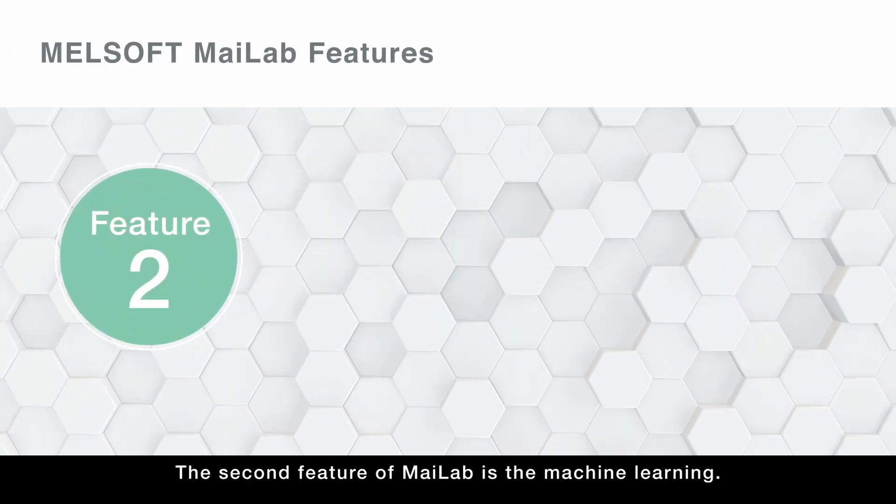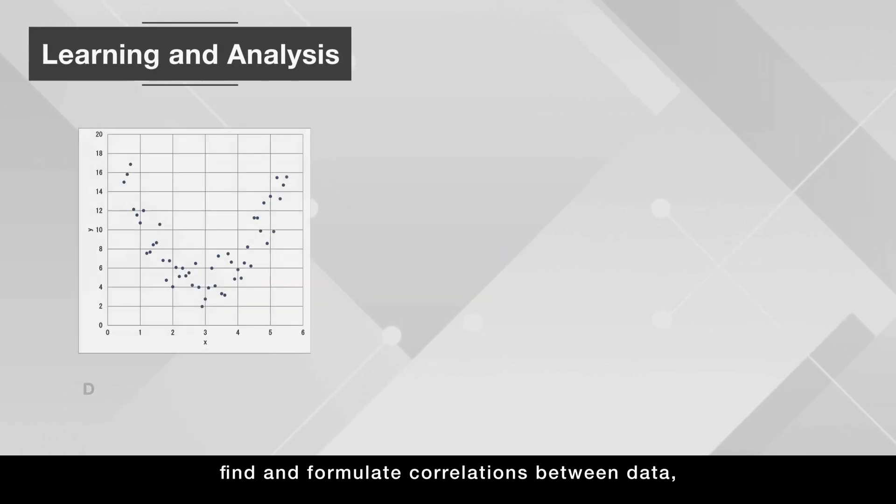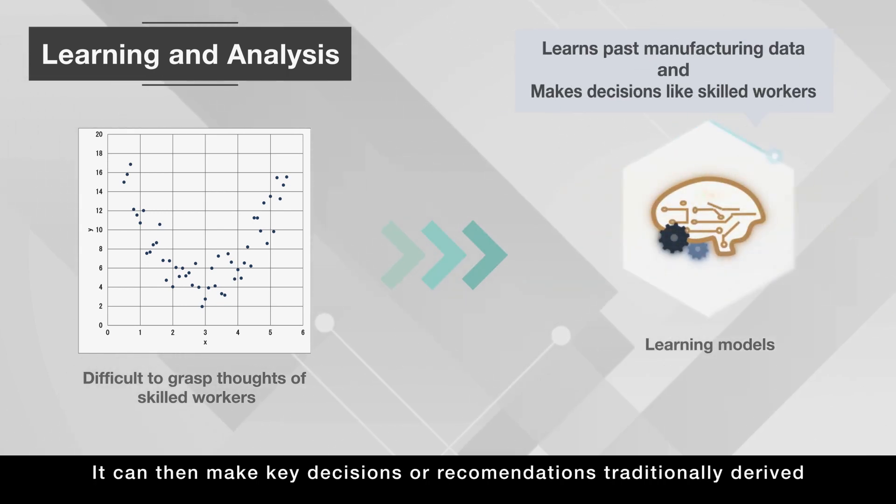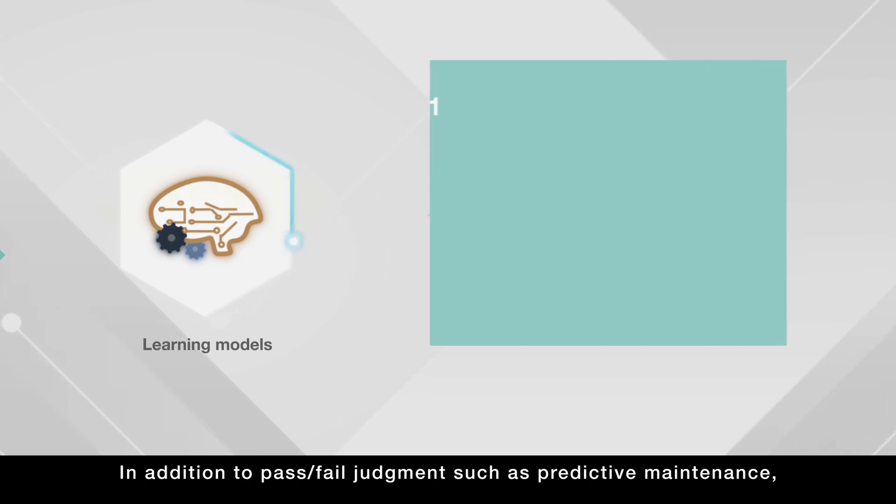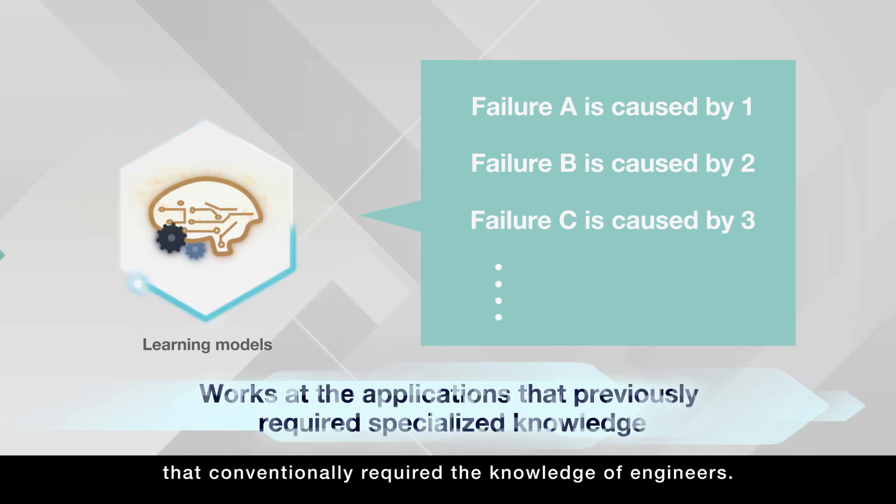The second feature of MyLab is the machine learning. Unlike the traditional method in which people find and formulate correlations between data, MyLab's machine learning learns from historical manufacturing data. It can then make key decisions or recommendations traditionally derived by countless man-hours. In addition to pass-fail judgment, such as predictive maintenance, this feature derives multiple answers making it effective for applications that conventionally required the knowledge of engineers.